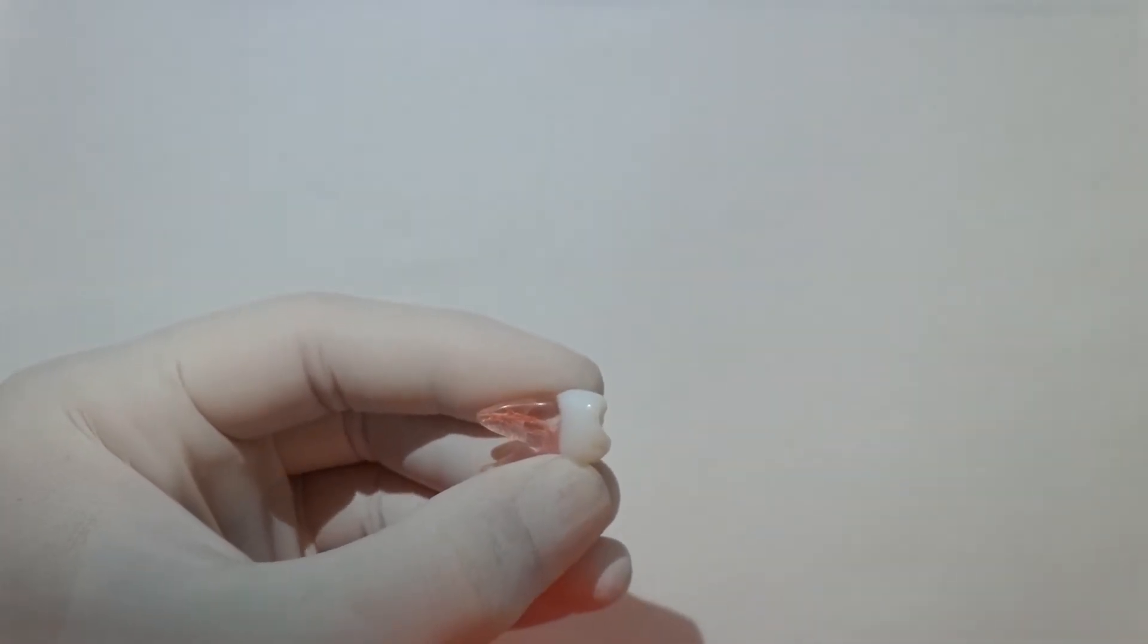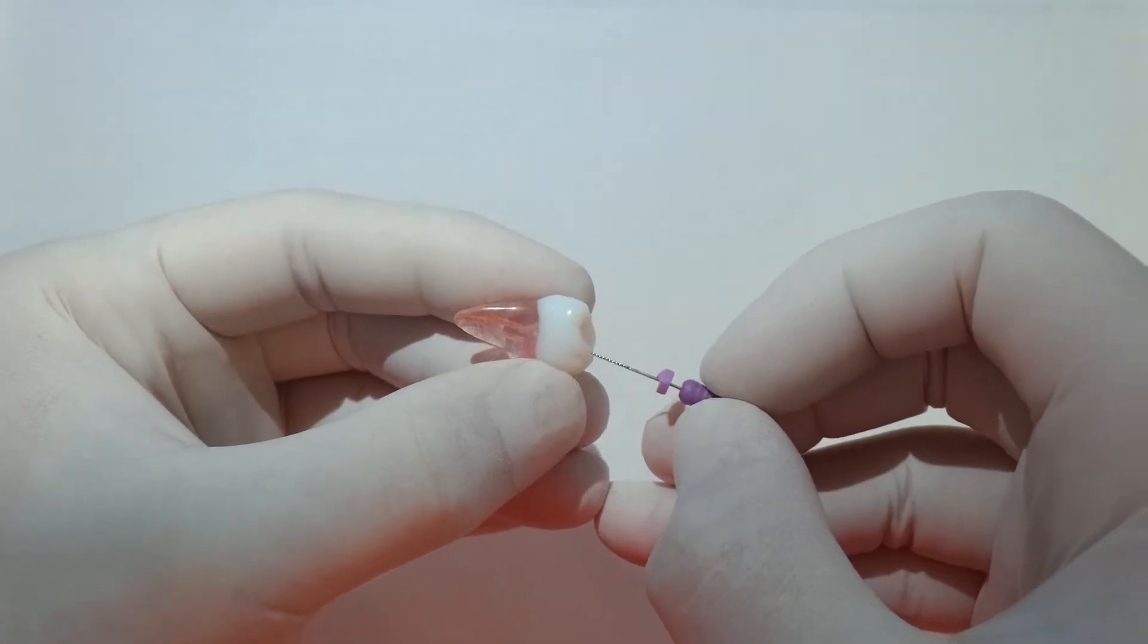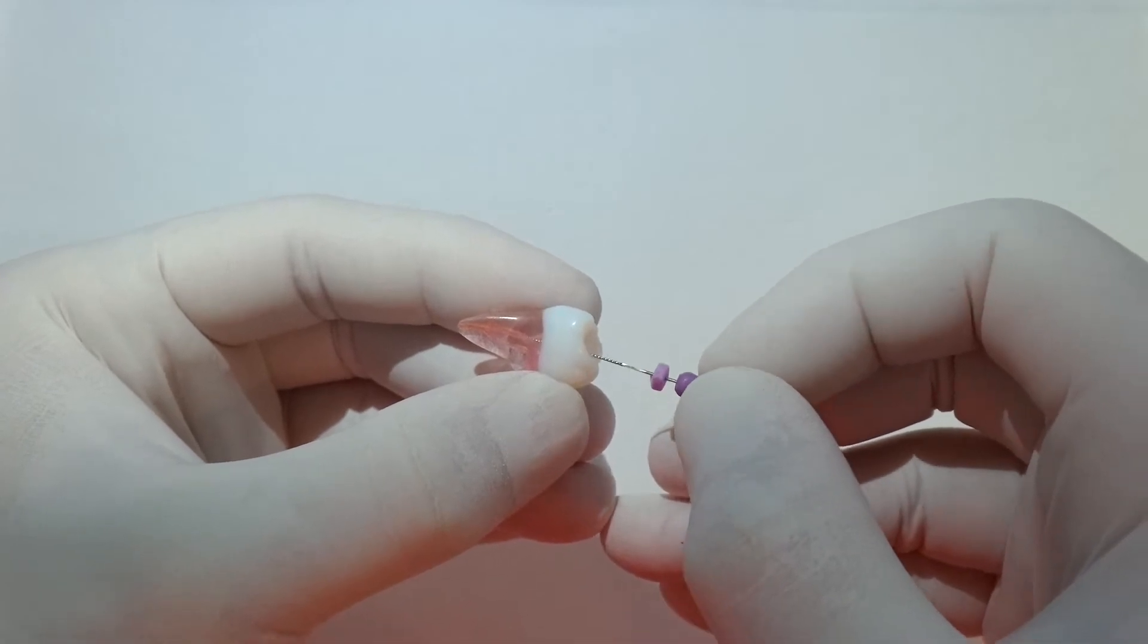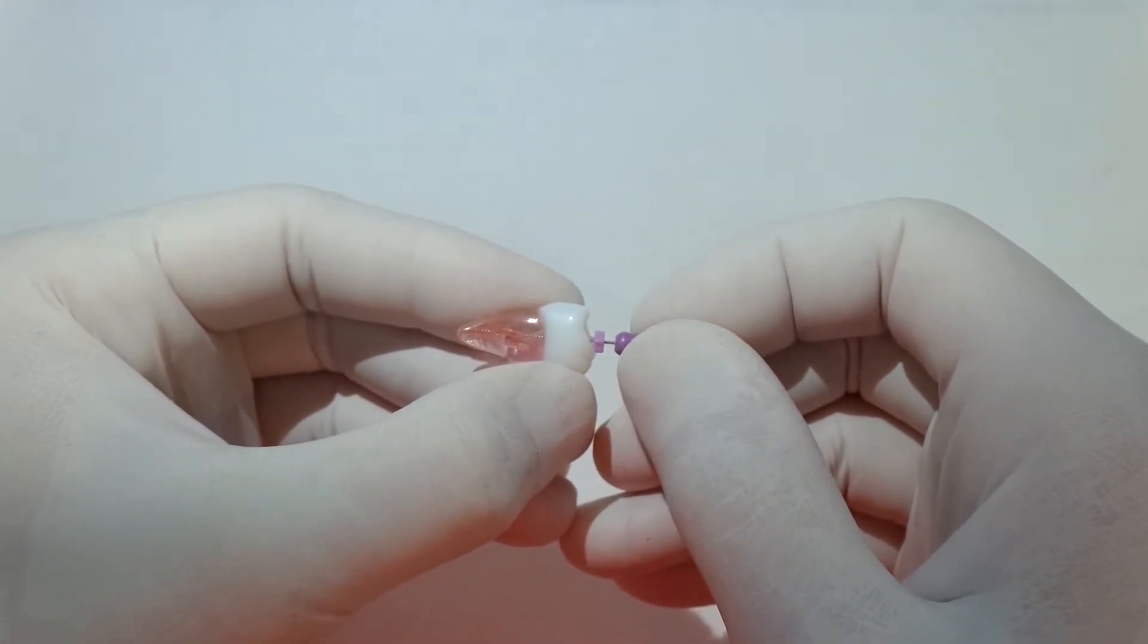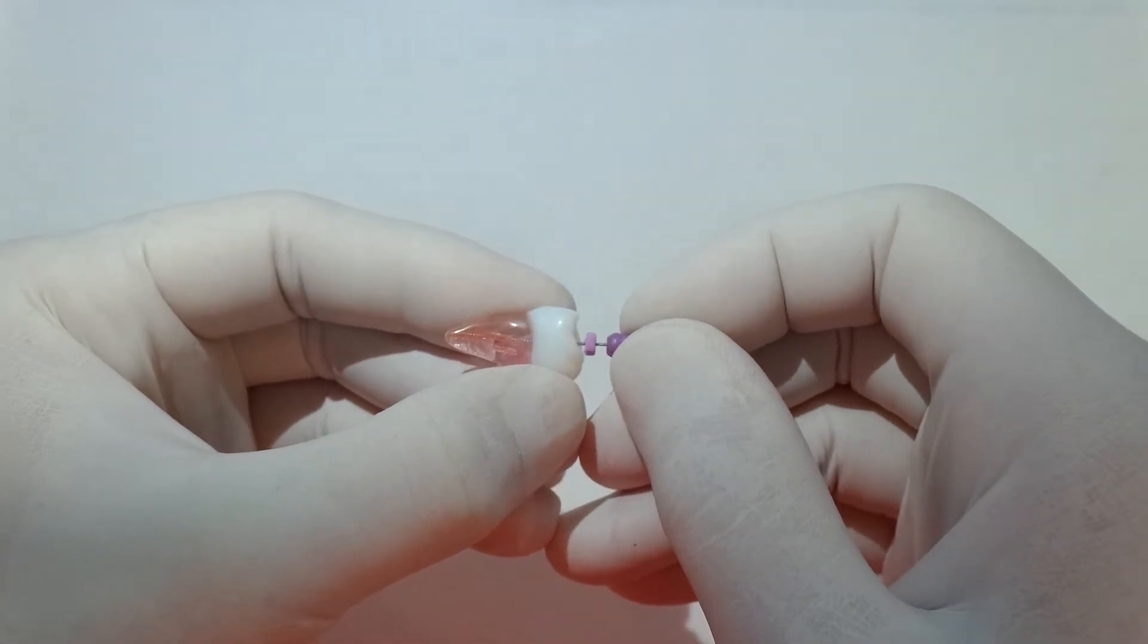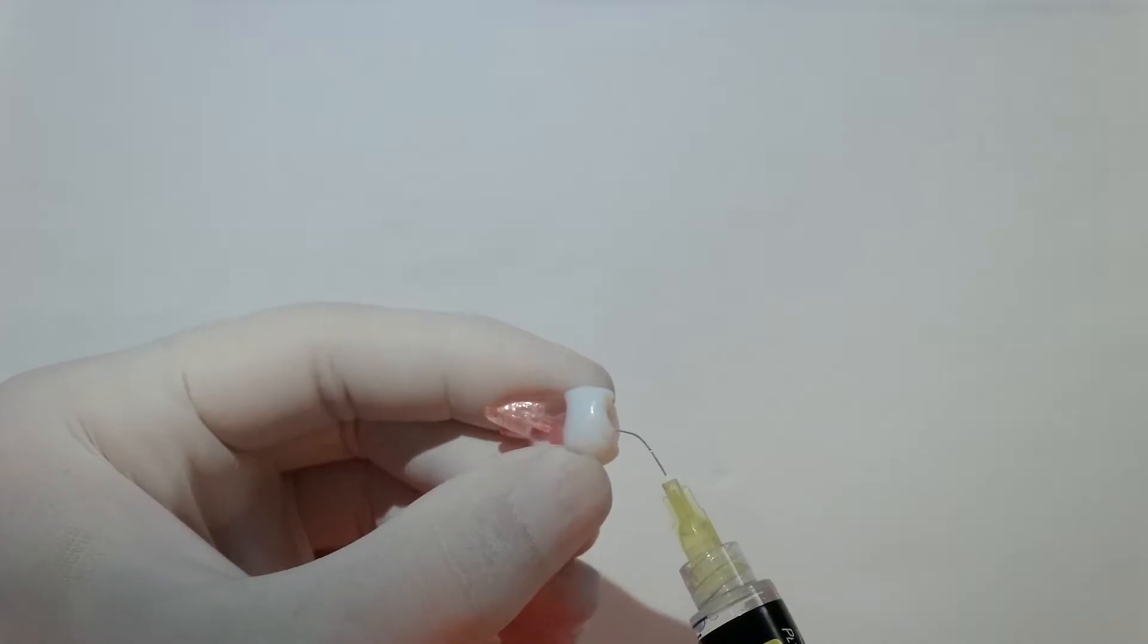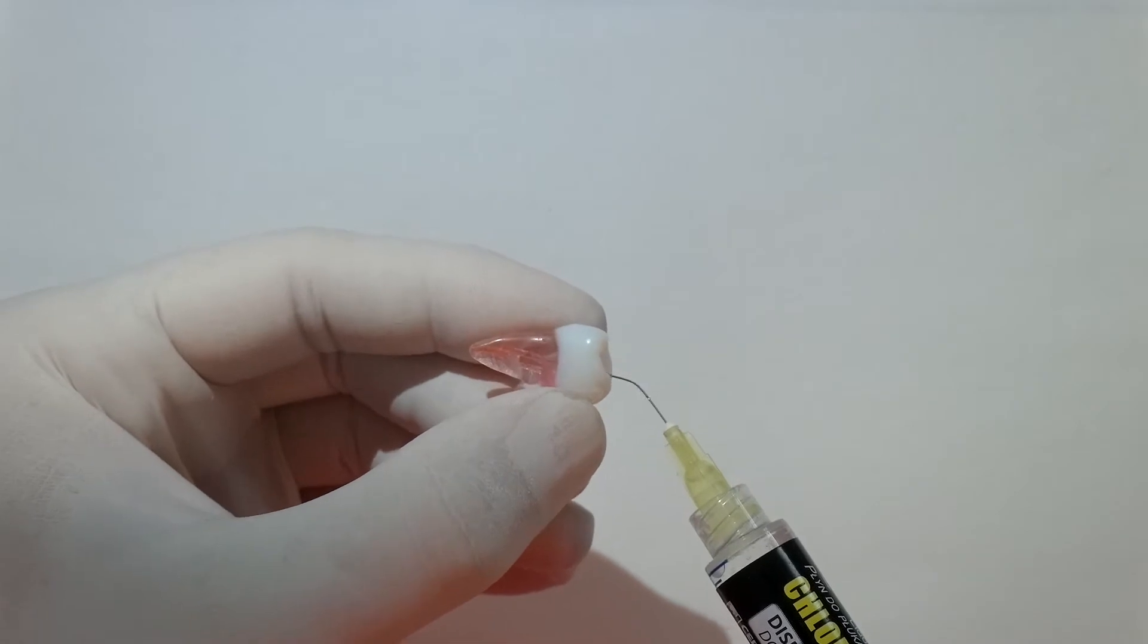Really important in between each of these files that we irrigate, we patency file, we make sure there's no blockages right at the very end of the canal. That's nicely patent still, we'll irrigate with some sodium hypochlorite, just make sure there's no debris accumulating.